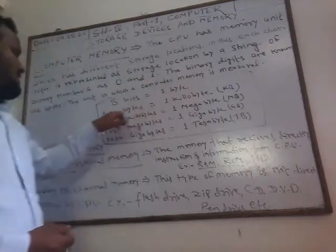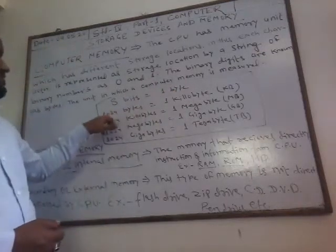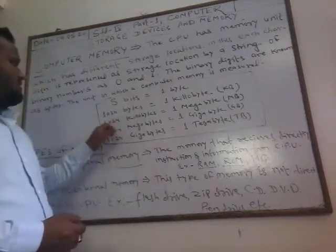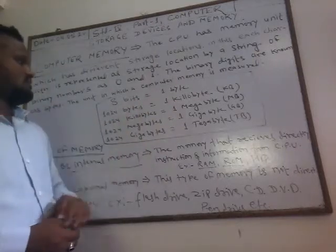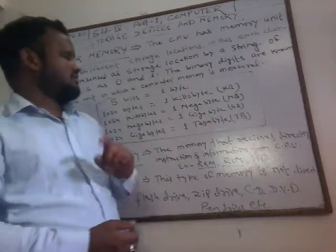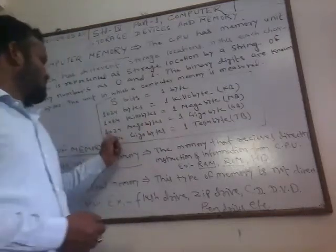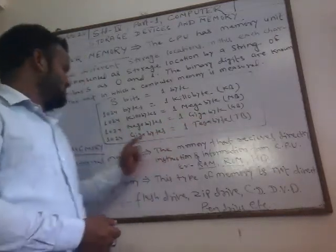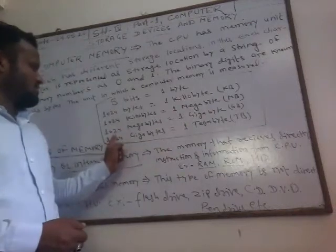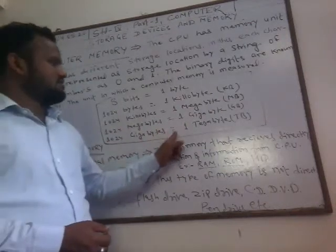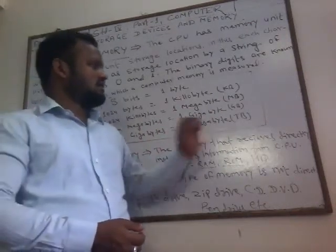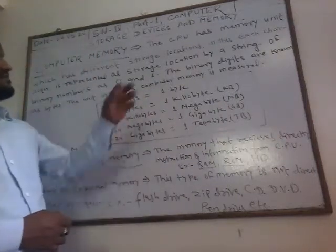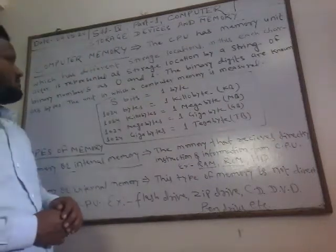1 byte, then 1024 bytes equal 1 kilobyte or 1 KB. 1024 kilobytes equal 1 megabyte or 1 MB. 1024 megabytes equal 1 gigabyte or 1 GB. 1024 gigabytes equal 1 terabyte or 1 TB.